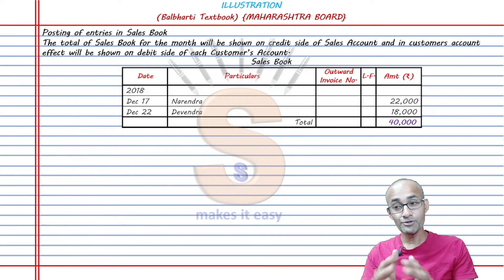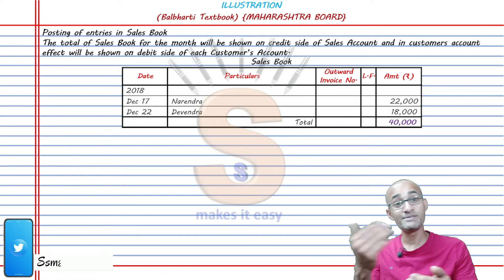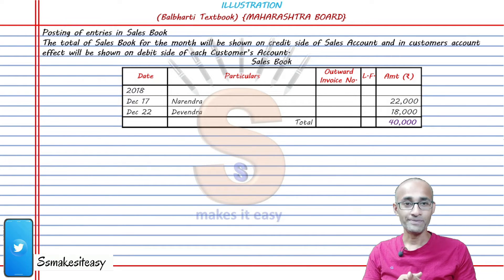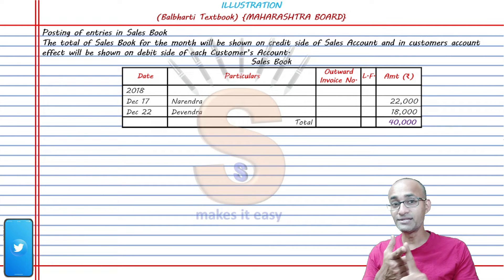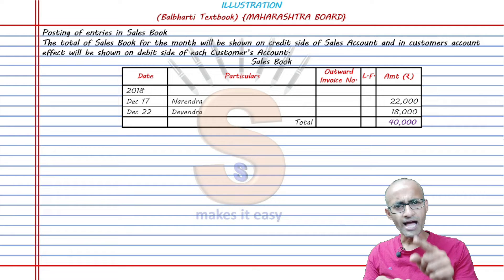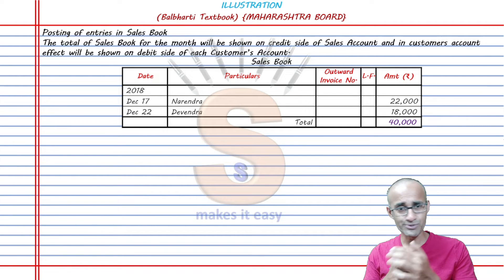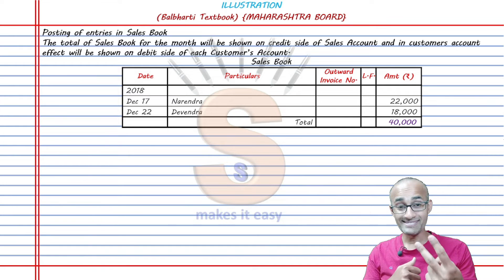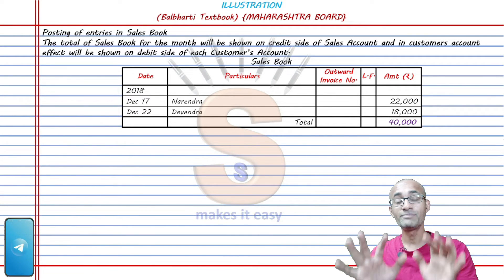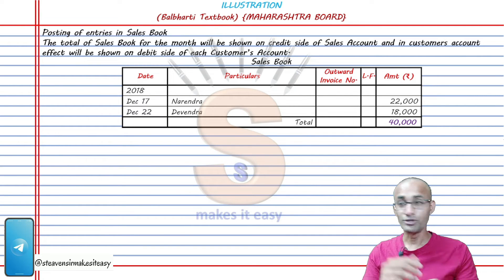The purchase book records purchases and the sales book records sales. The supplier supplies and the customer buys. In this example, Narendra and Devendra are customers. You have a sale on December 17th to Narendra for 22,000 and on the 22nd to Devendra for 18,000. The total sales you received in the sales book for December is 40,000.